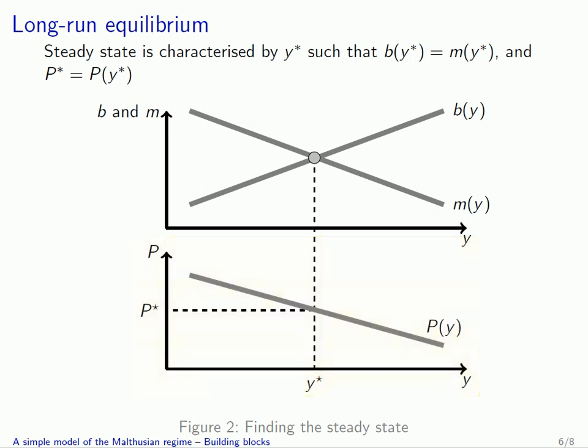To find the steady state of this economy, we need to take into account the fact that population must be constant at the steady state. In order to have a constant population, the fertility rate needs to equal the mortality rate. So the steady state is characterized by small y* such that b(y*) equals m(y*) — that's the intersection of the two curves on the upper panel of the graph.